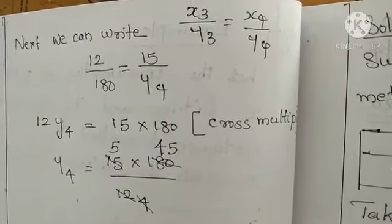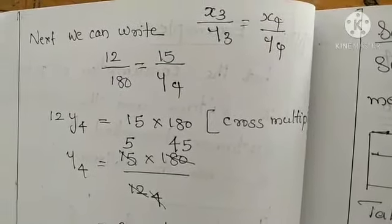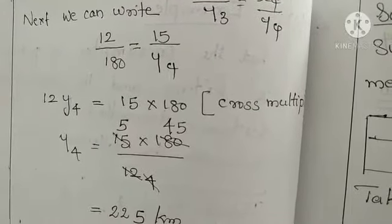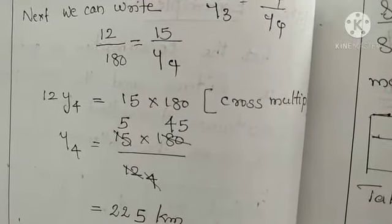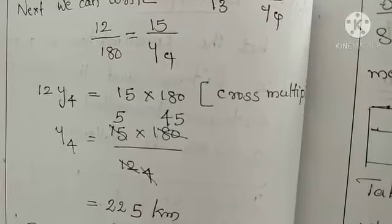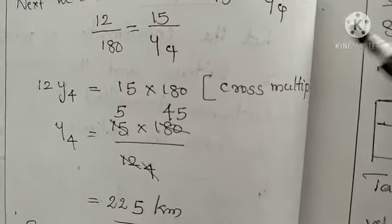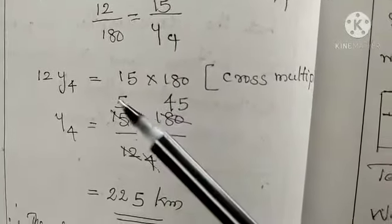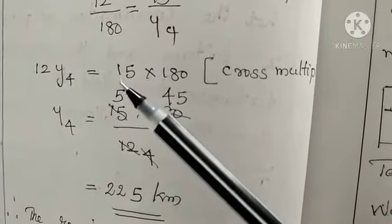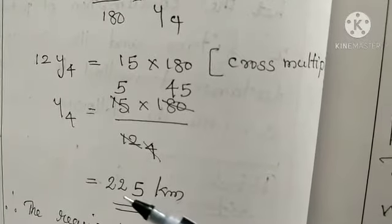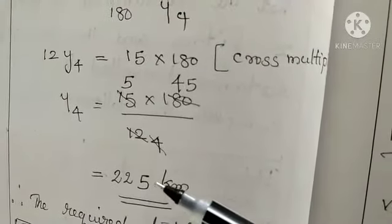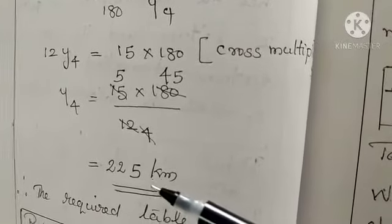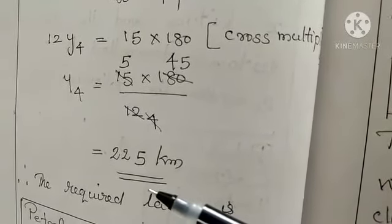Next unknown is y4. x3, y3, x4 we know. Using these values, we can calculate y4, that means the y value of the corresponding x4. Substitute the values. We will get 12 by 180 is equal to 15 by y4. Cross multiply. 12y4 is equal to 15 into 180. After calculation, 225 kilometers can be traveled using 15 liters of petrol. Understood the way? Use the condition and substitute the values. Then we can calculate the unknown.